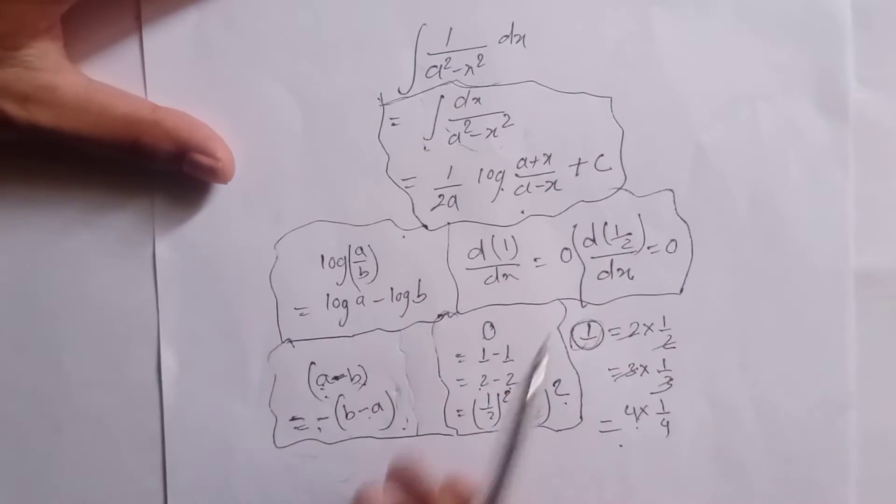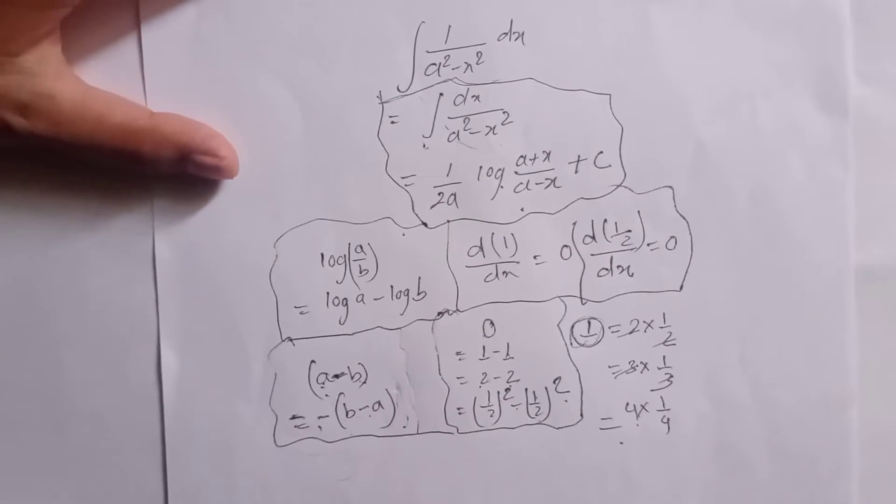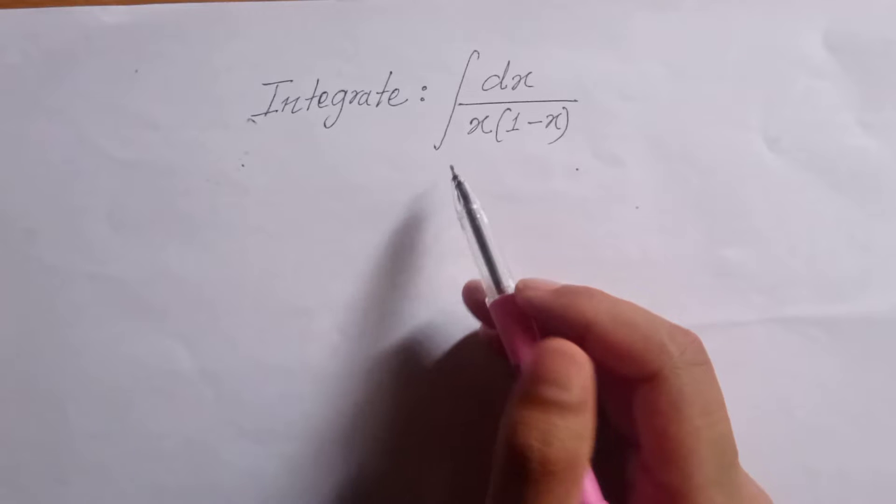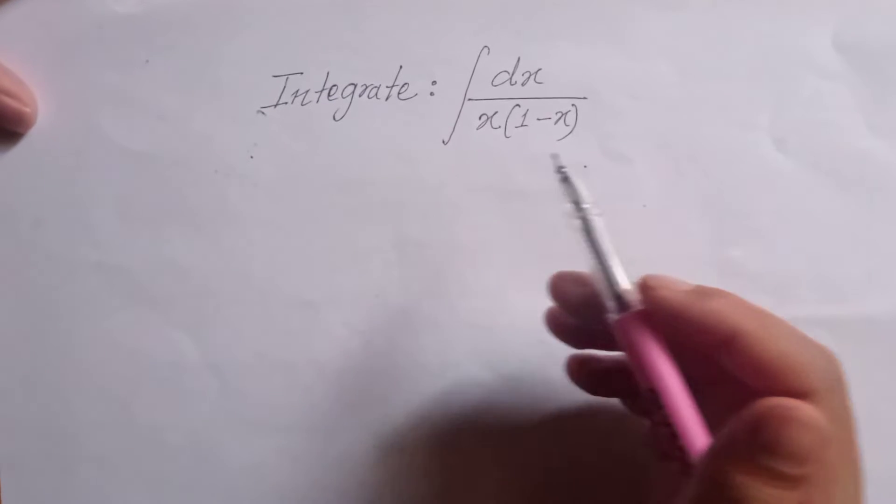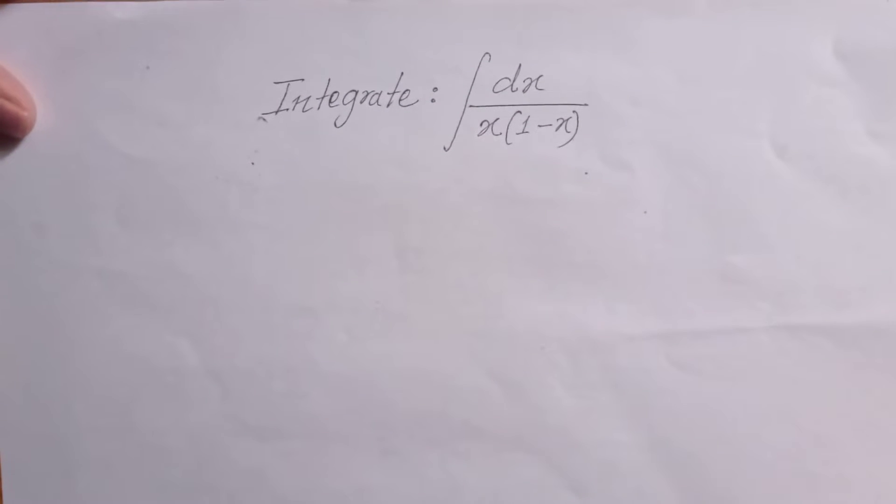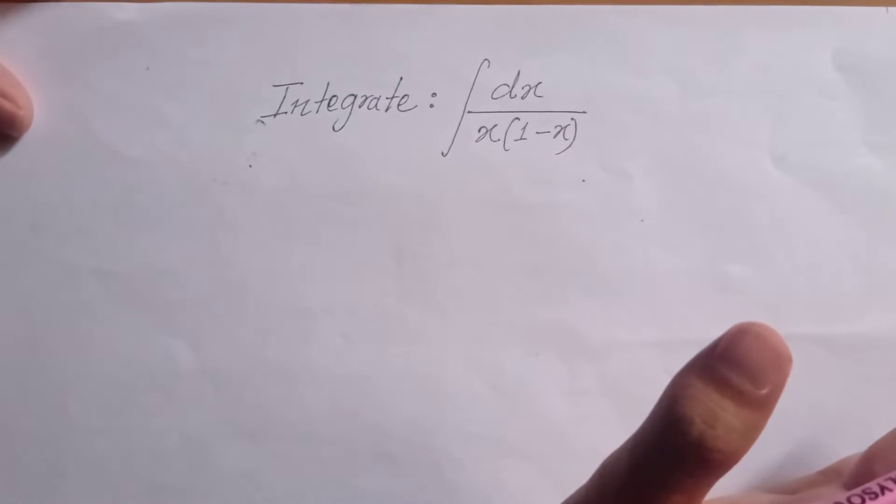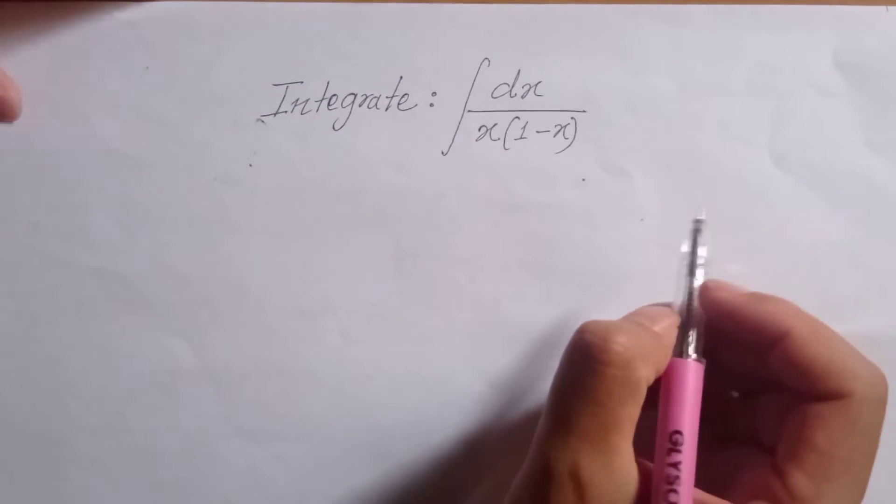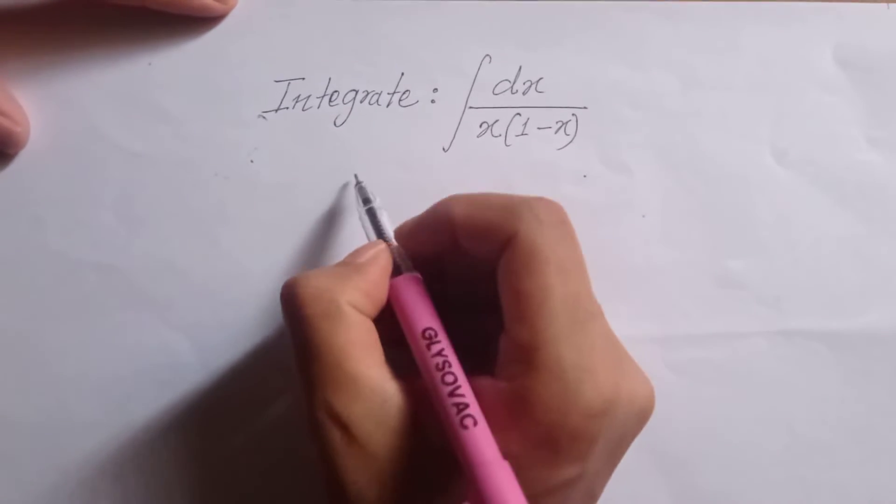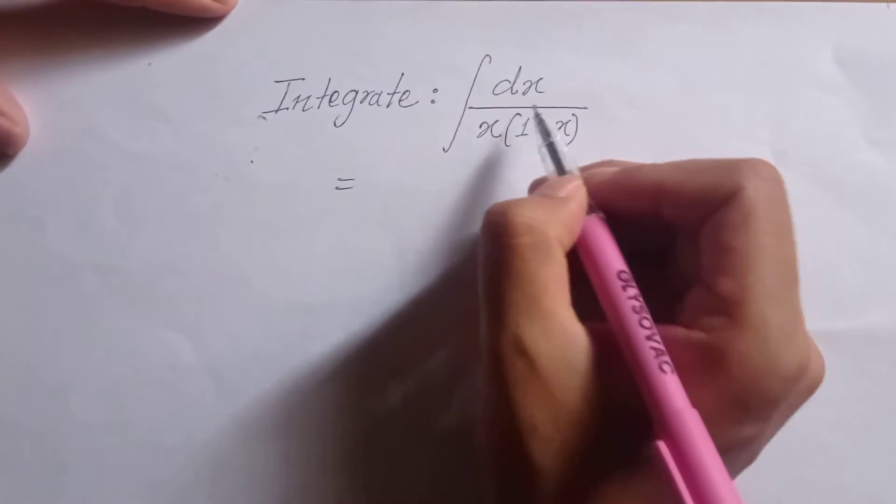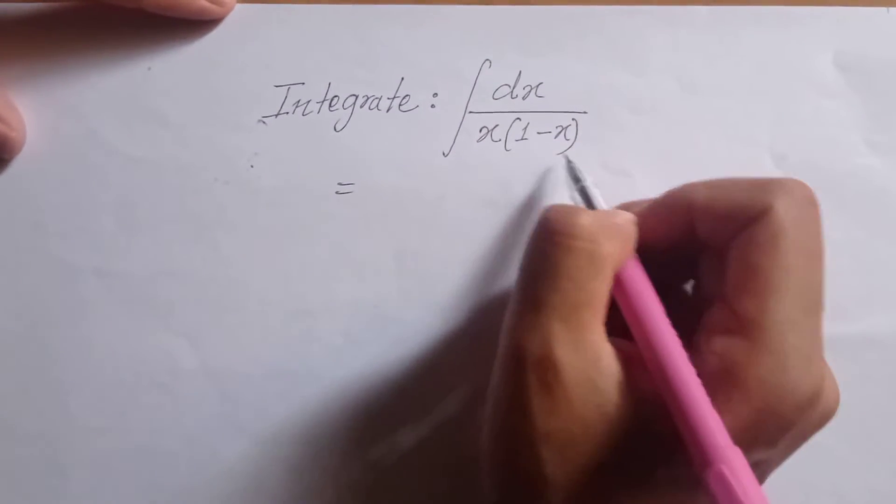This is a very difficult question. Actually, this question uses the partial fraction method to be solved in the next video. Now I am going to solve the normal integration. So, integration of dx by x times 1 minus x.